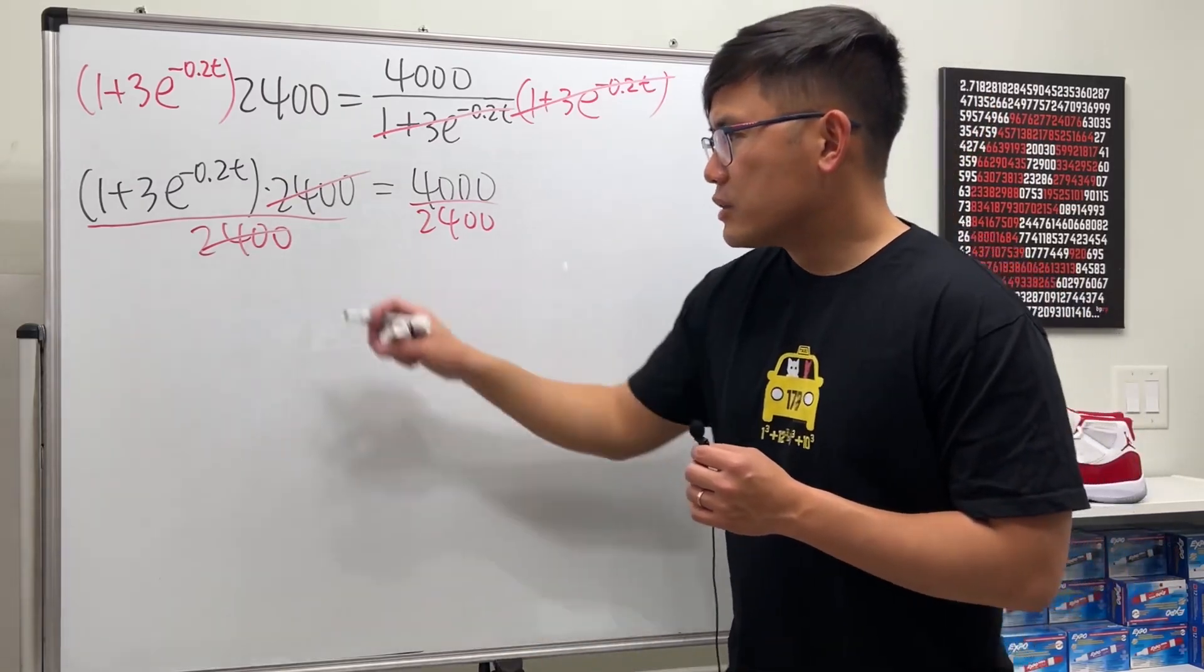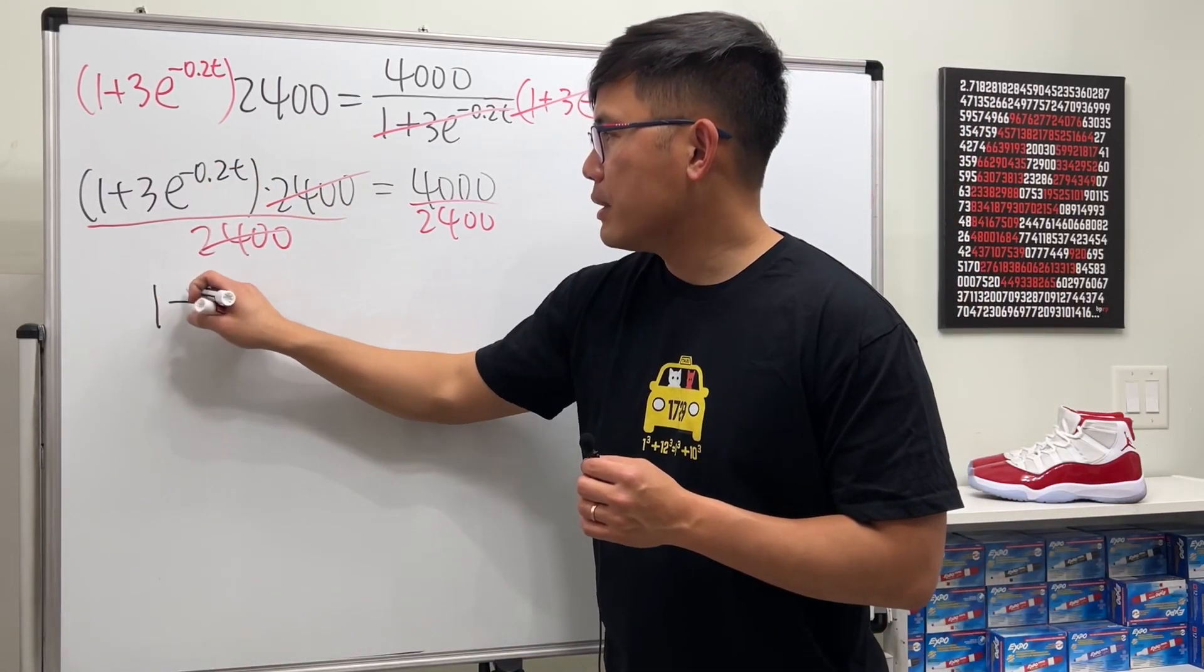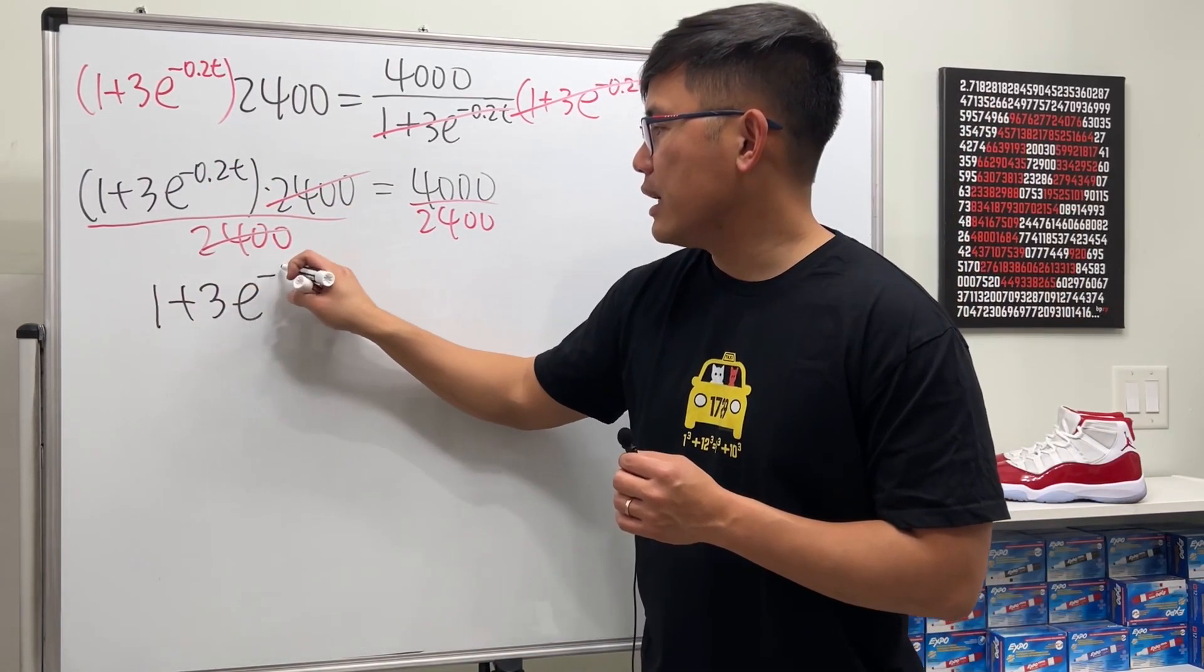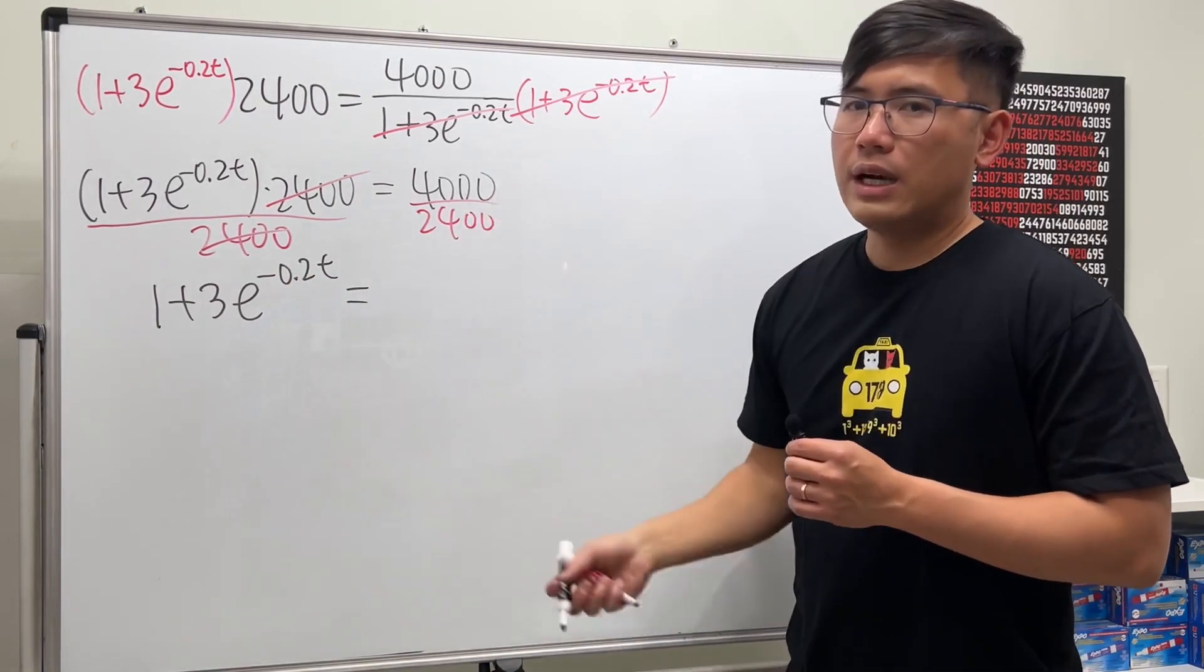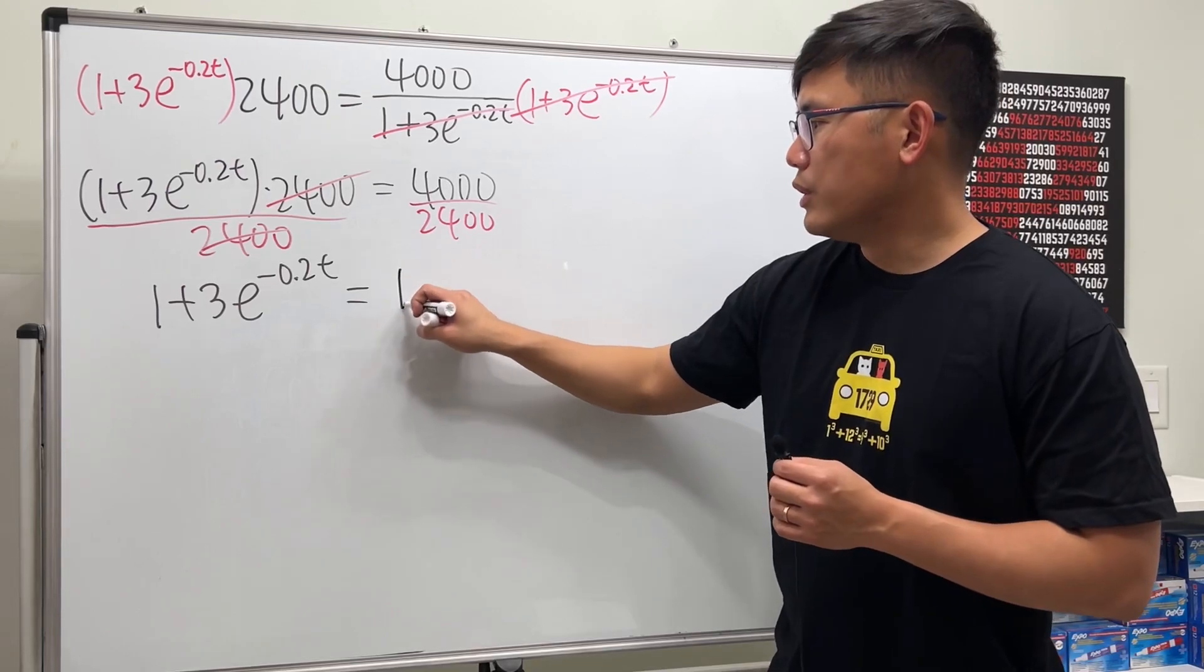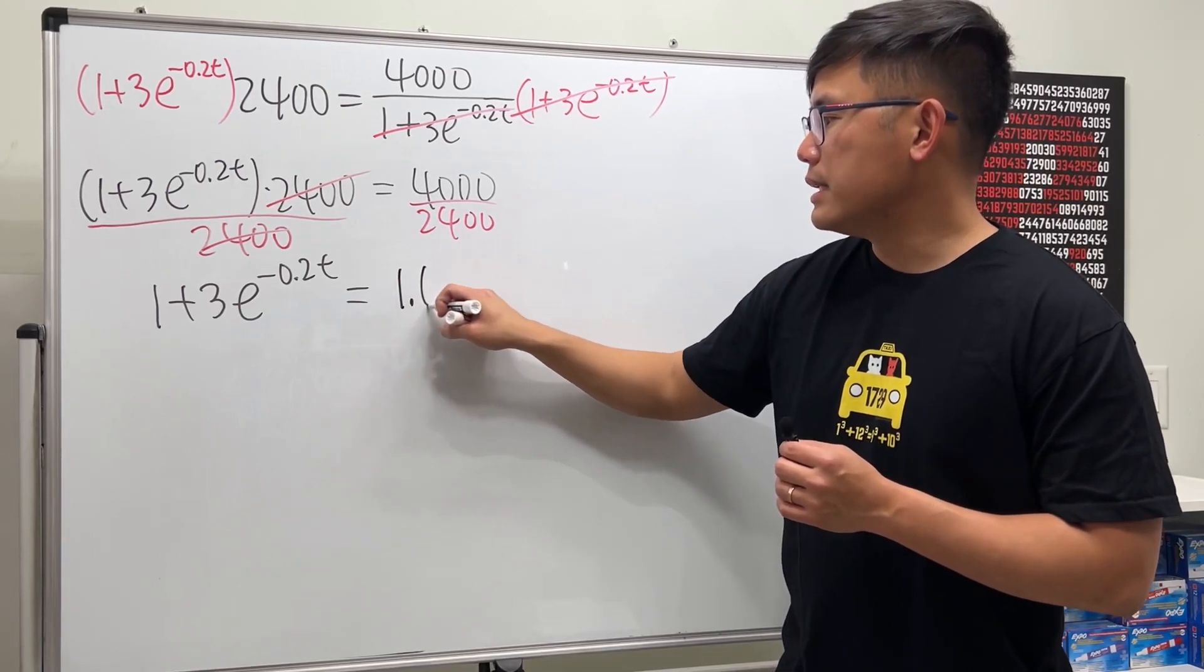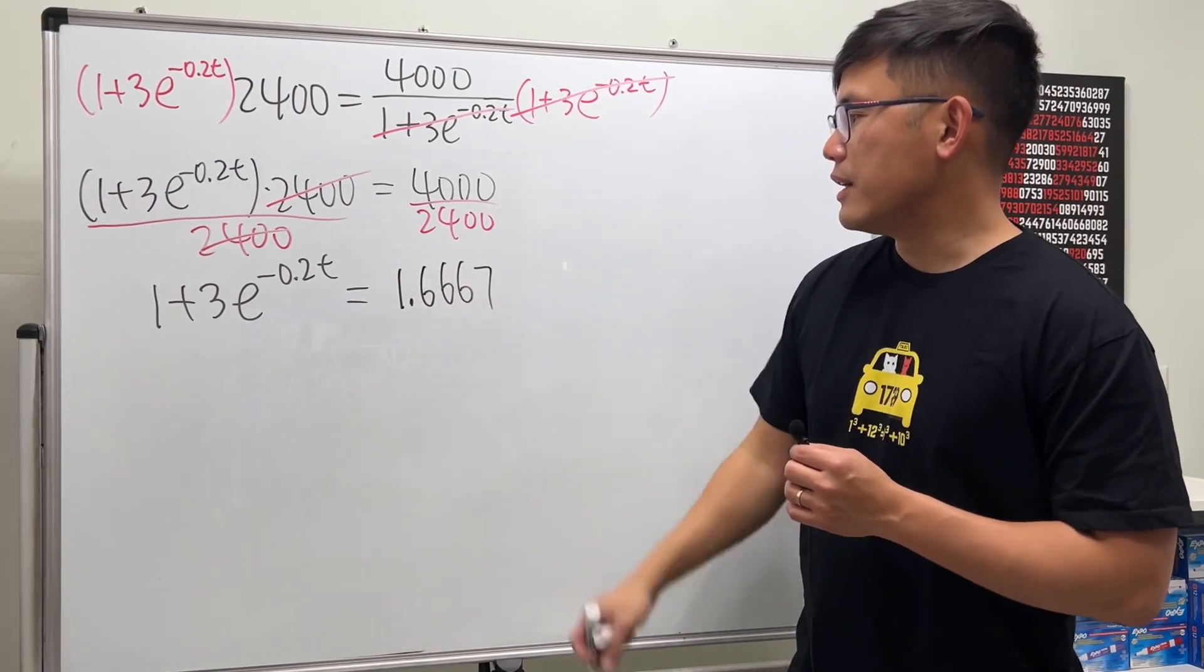On the left side you get 1 plus 3 times e to the negative 0.2t, and on the right side, just work it out on the calculator using decimals. You get approximately 1.6667, and usually just use four decimal places for computations like this.